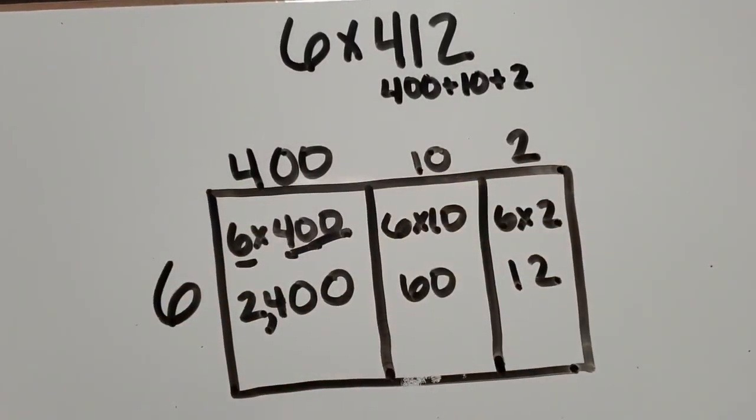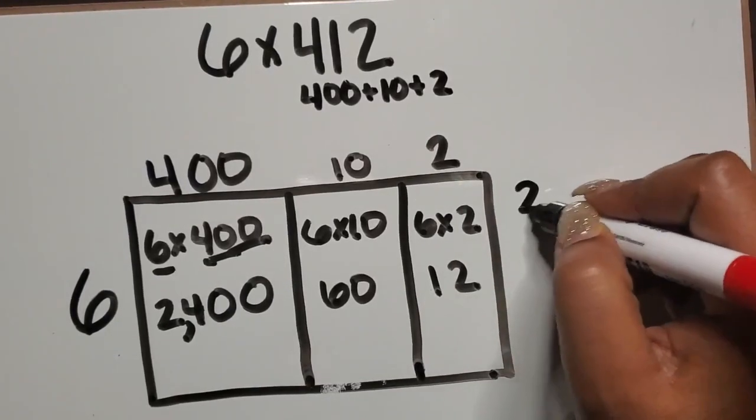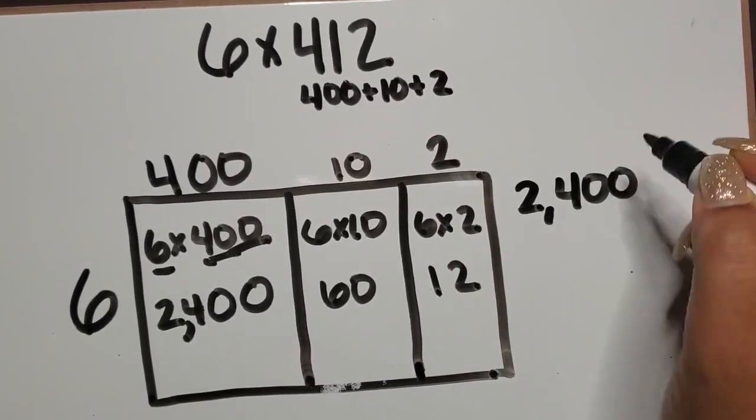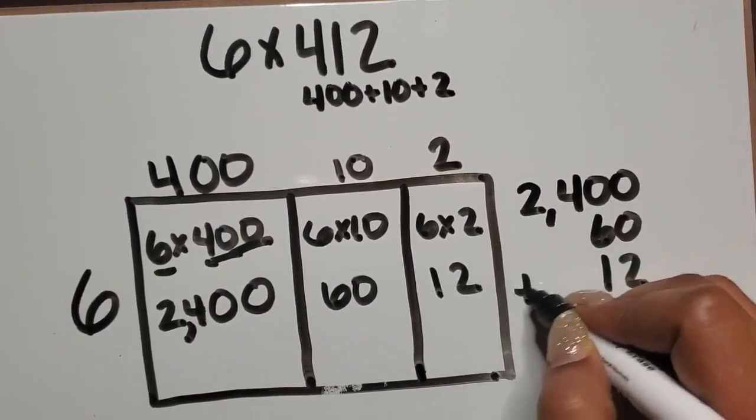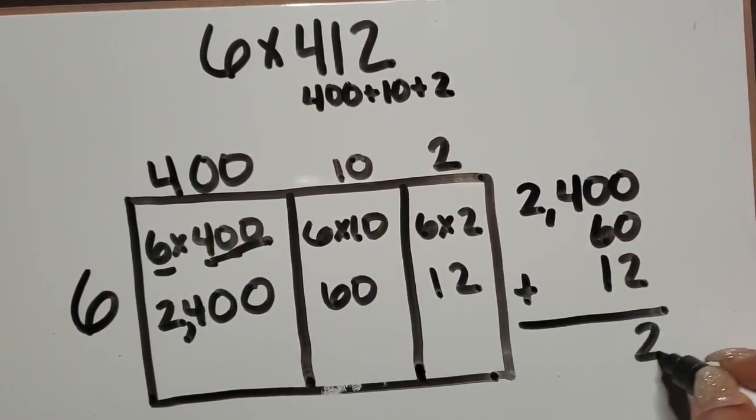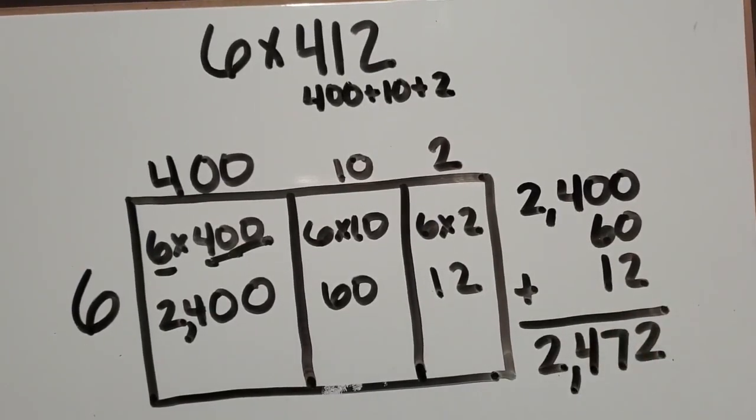So we need to join those totals back together. So I'm going to add them up together over here on the side, lining them up based on their place value, and our product is 2,472.